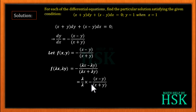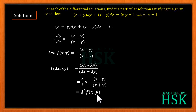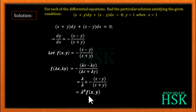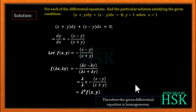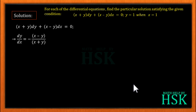On taking λ common from both numerator and denominator, we get f(λx, λy) = (λ/λ) × [-(x - y)/(x + y)], which equals f(x, y). So we can write f(λx, λy) = λ⁰ × f(x, y). Therefore, the given differential equation is a homogeneous differential equation.